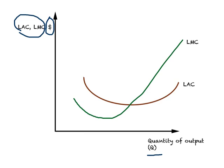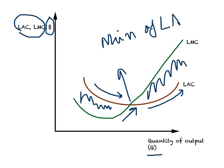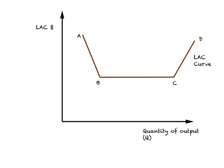Both curves are U-shaped. Where LMC is less than LAC, the LAC is declining. Where LMC is greater than LAC, the LAC is increasing. So LMC intersects the LAC curve at LAC's minimum point. The location of these curves is based on the relationship between marginal and average concepts.